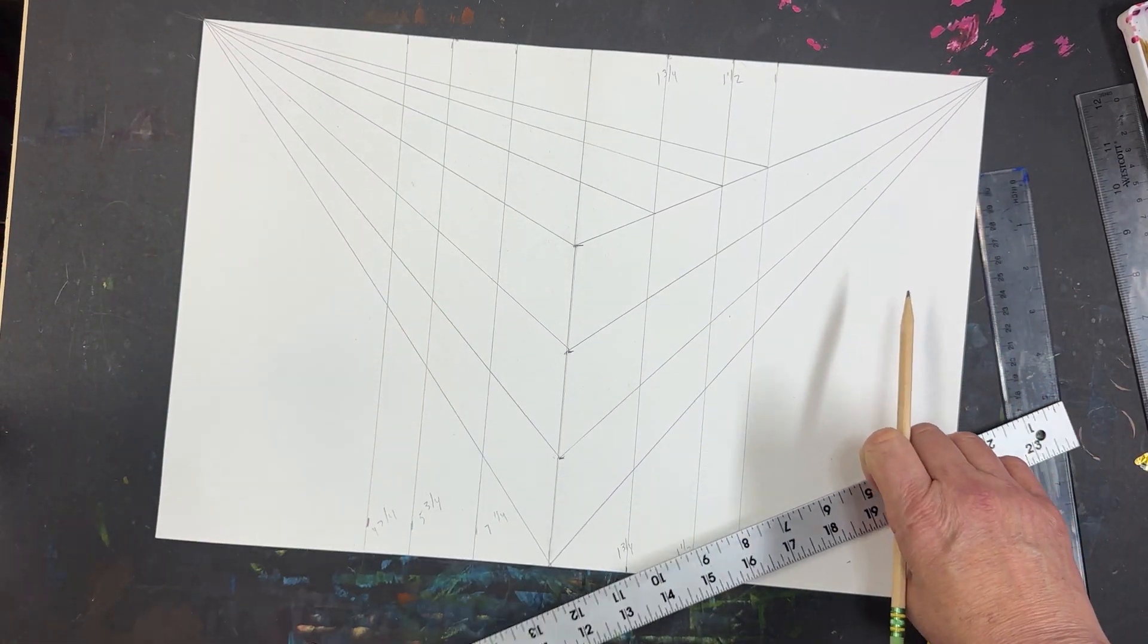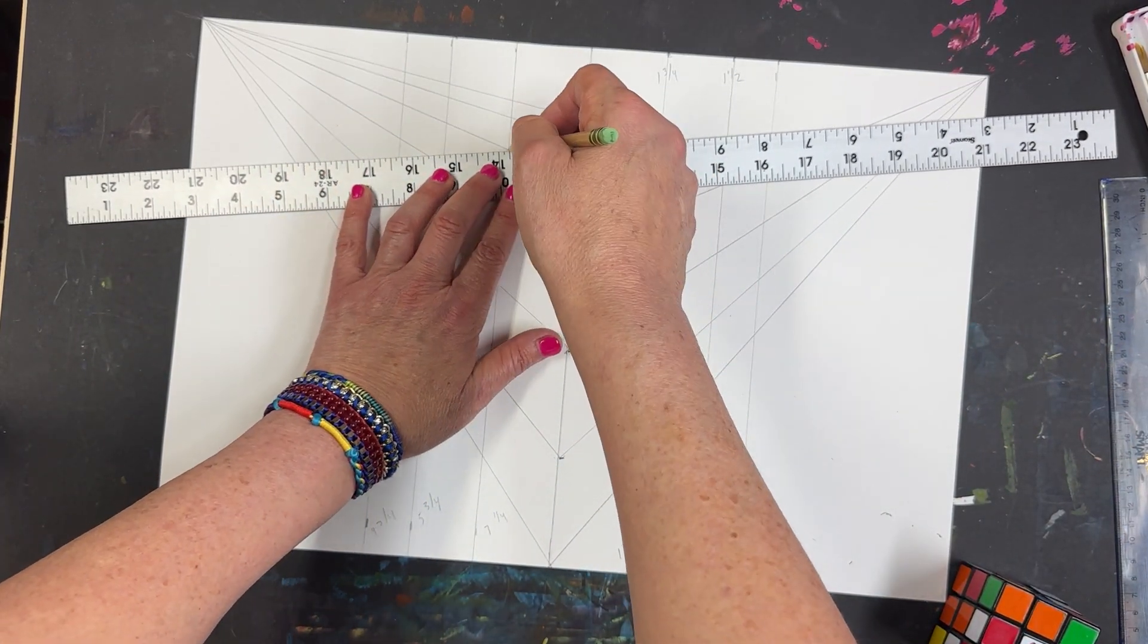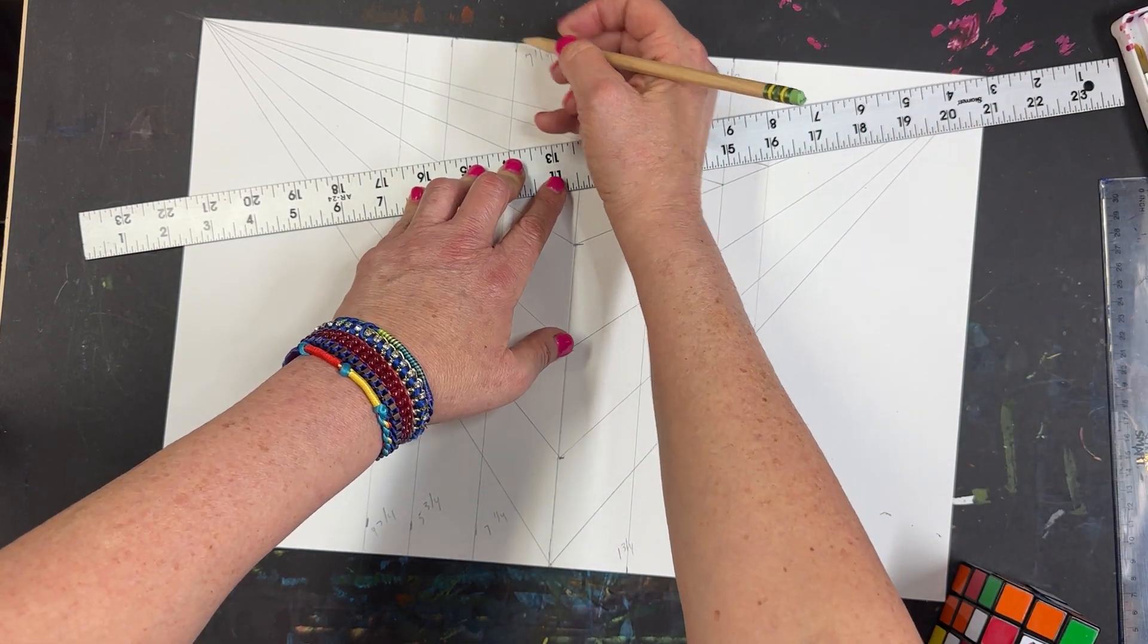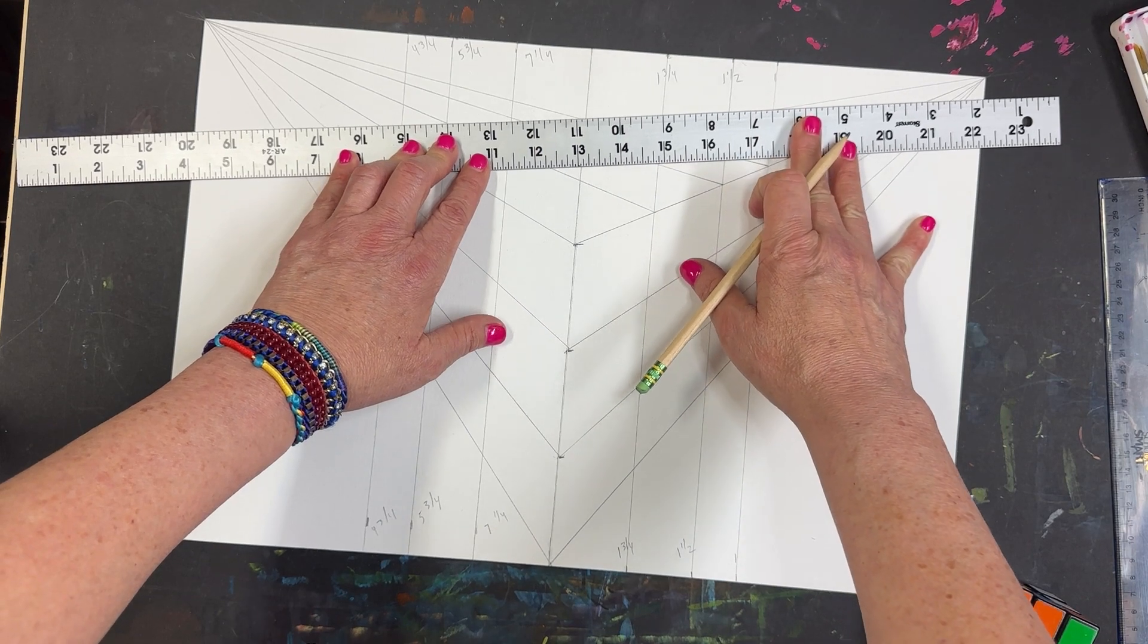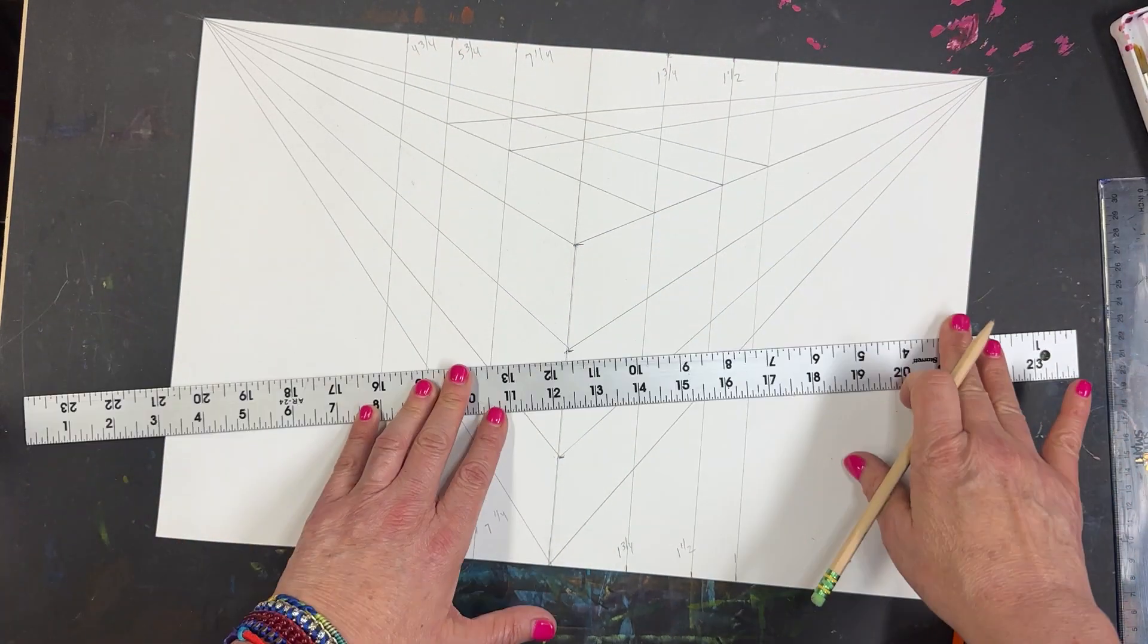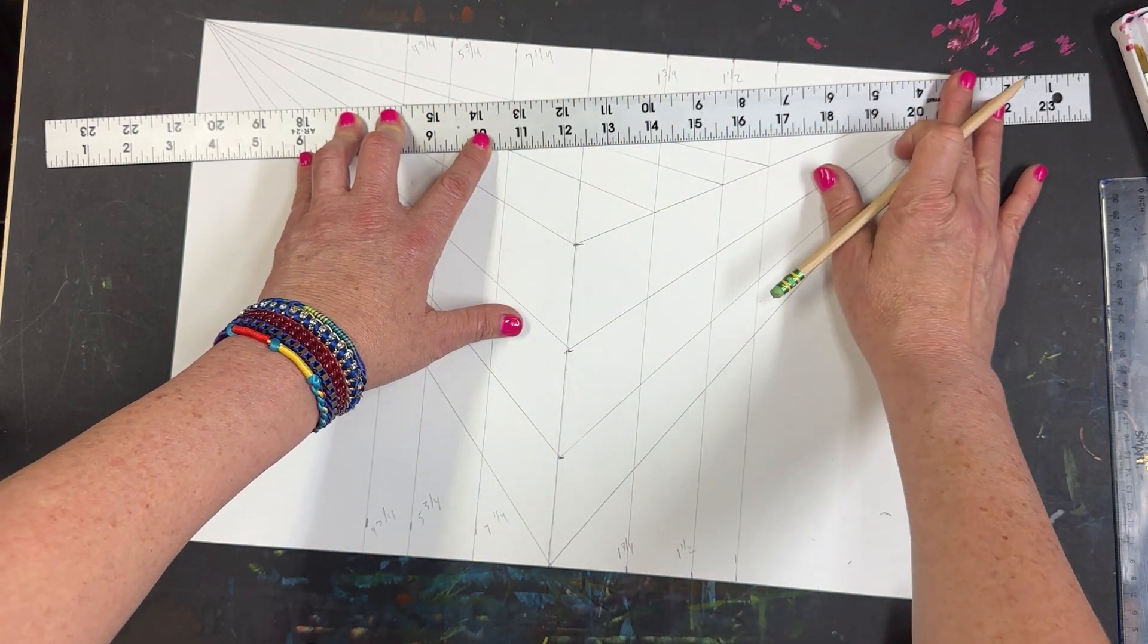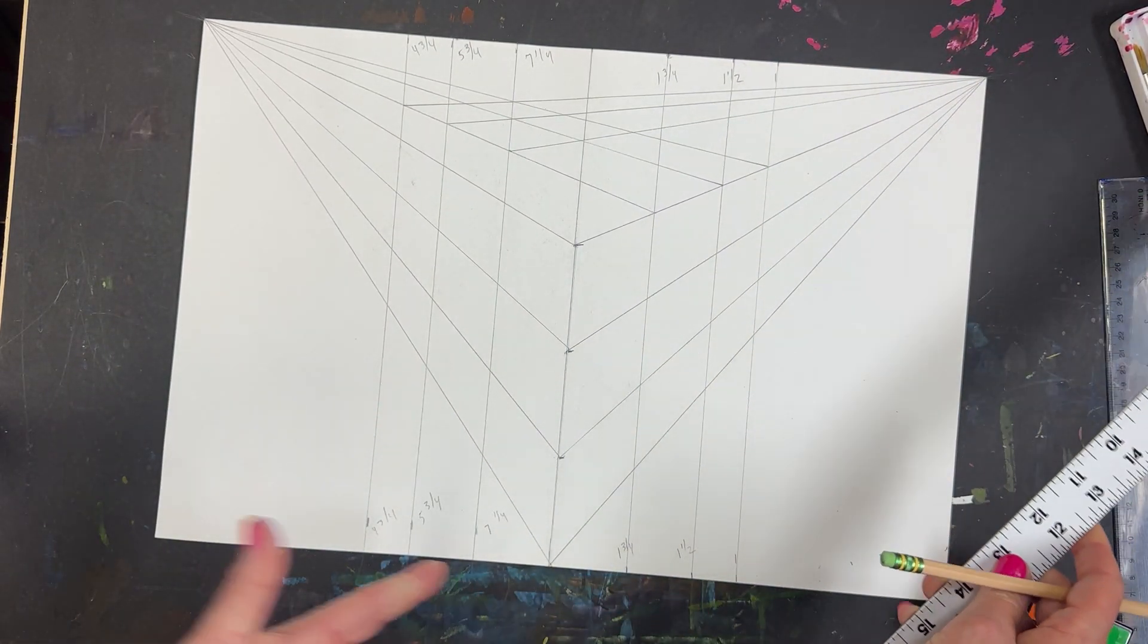Now I'm going to do the same on the right. I'm going to take the 7¼ line, line it up really slowly and nicely. Draw your lines really light. Your 7¼, 5¾, and 4¾. And now it might get a little confusing, but you're going to think about the top of the lines and this spot right here. And here you have your Rubik's Cube. It's done.